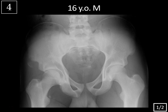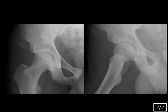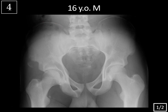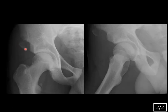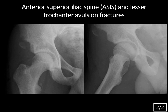Case 4, 16-year-old male. On the frontal view of the pelvis, the iliac apophyses are open, which is normal at this age. There is an asymmetric bone fragment adjacent to the anterior inferior iliac spine, and another apparent bone fragment adjacent to the lesser trochanter which also looks asymmetric. On cone-down views of the right hip, we can better see the avulsion fragment from the anterior inferior iliac spine. The lesser trochanter fragment appears more chronic due to corticated margins, while the anterior inferior iliac spine fragment is more acute with an ill-defined contour along the donor site.